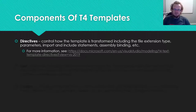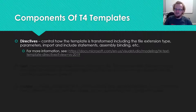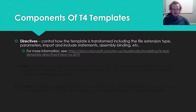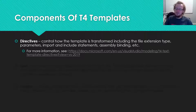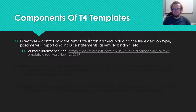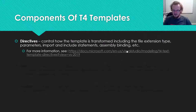There are a bunch of different components of what a T4 template actually is. The first is called a directive. Directives determine how your template is going to be transformed. They can include things like changing the file extension type, importing specific libraries, or referencing specific assemblies. We'll go through specific examples in the code-along, and there's also a link where you can look at all the different uses for directives.